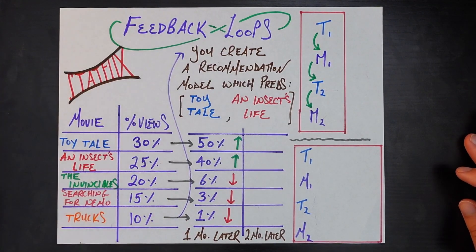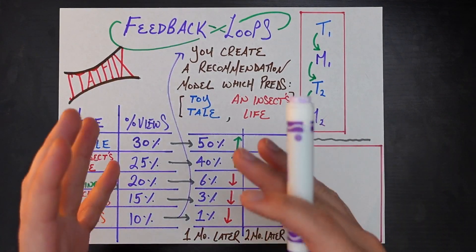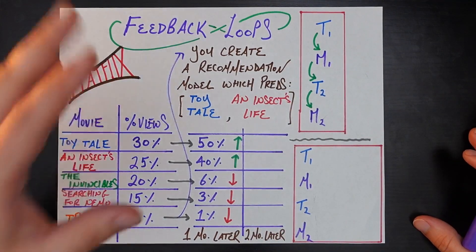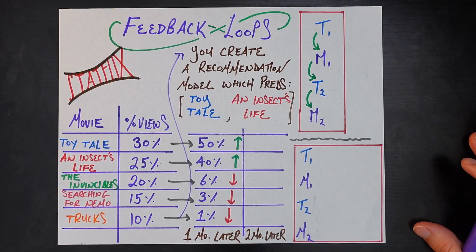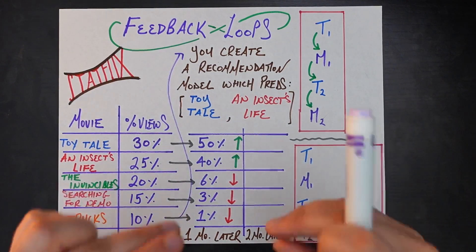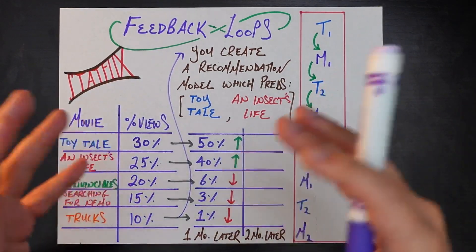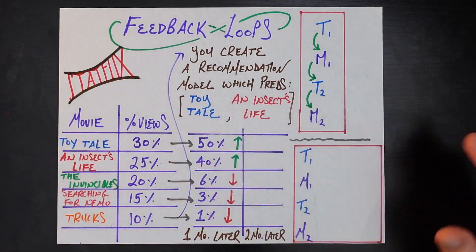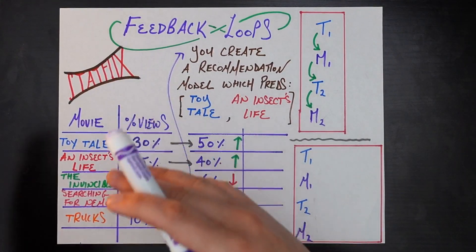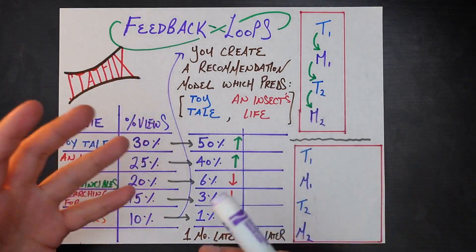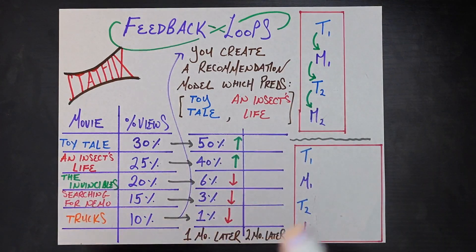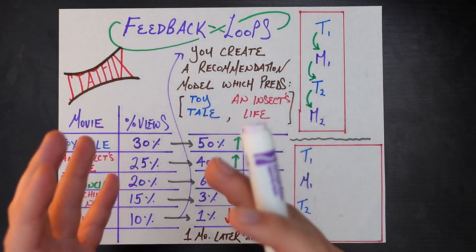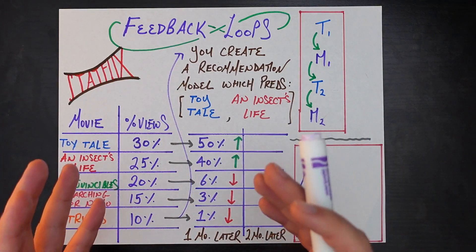In academic courses or Kaggle competitions, usually it's a very self-contained project: here are some features, here's the label you're trying to predict, train me a single model. You're going to train this thing once and get the best performance on some metric. What they usually don't think about is what happens in a real-life setting where you're not just going to train your model once.